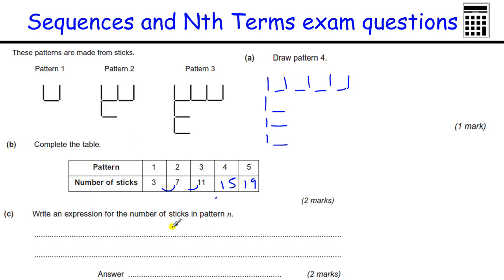The number of sticks in pattern n, well it's going up by four each time. So that's the four times table. Four, eight, twelve, sixteen. And you can clearly see I've got to take away one. That's the four times table, 4n. And this sequence is the four times table take away one. Four take away one is three. Eight take away one is seven. So that's 4n minus one.